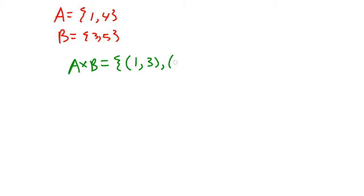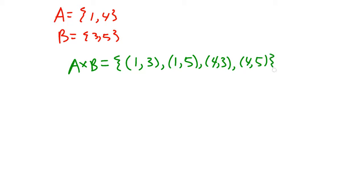So in this case I have (1, 3), (1, 5), (4, 3), and (4, 5). Those are the four ordered pairs in the Cartesian product A cross B.